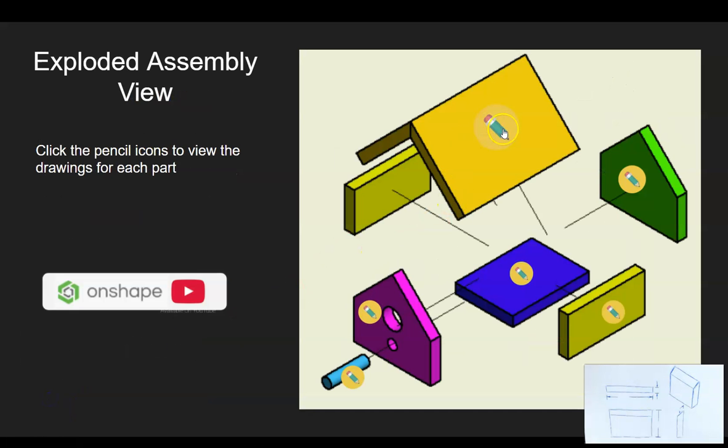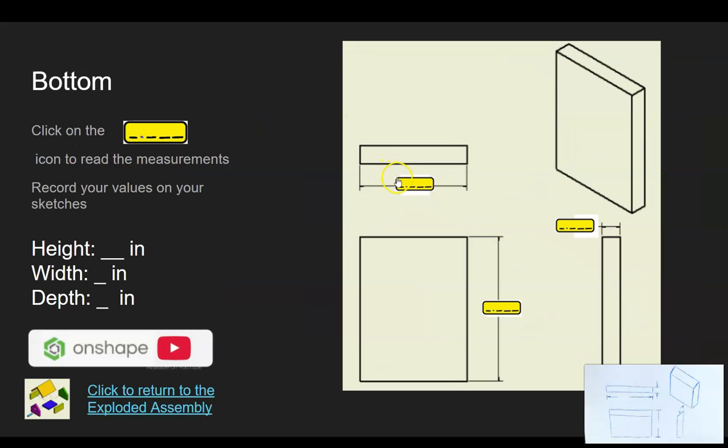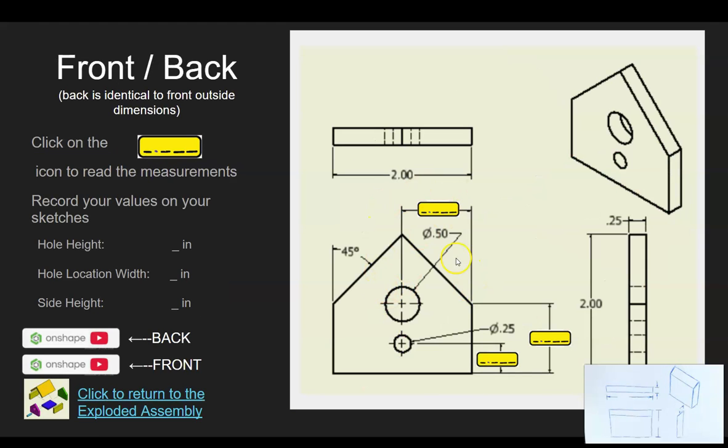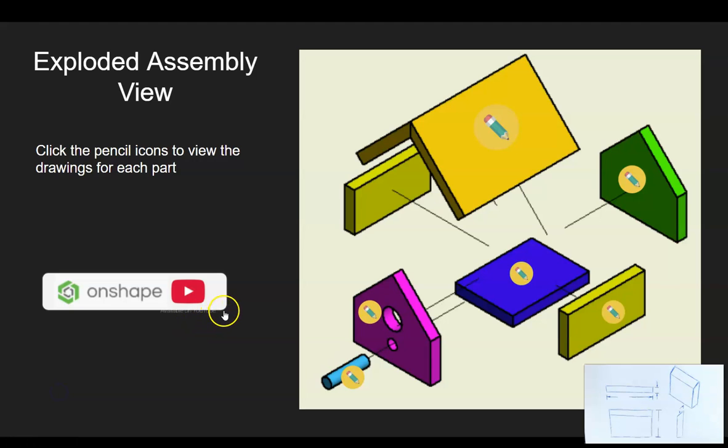Here are all of our different components in our exploded view. If I want to go to the bottom, there's the drawing of the bottom. The exploded view will take me back to the closed view. The pencil will take me to our drawing of that part and back.